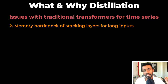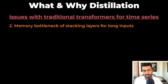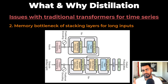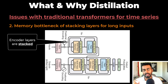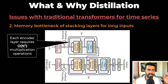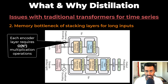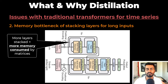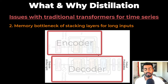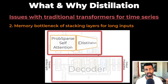The second challenge is the memory bottleneck in stacking layers for long inputs. In the transformer architecture, the encoder layers are stacked, and each encoder layer requires some order of n-squared multiplication operations, where n is the length of the time series sequence. More stacked layers means much more memory is consumed by the resulting matrices. To reduce the memory consumed, the informer makes use of distillation.